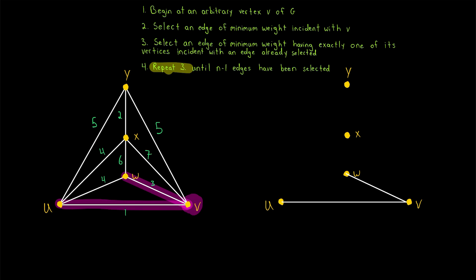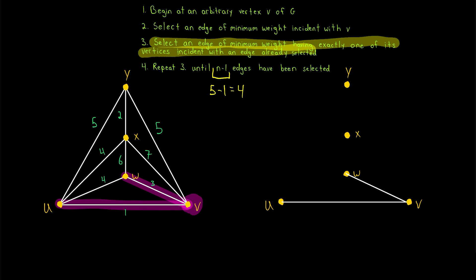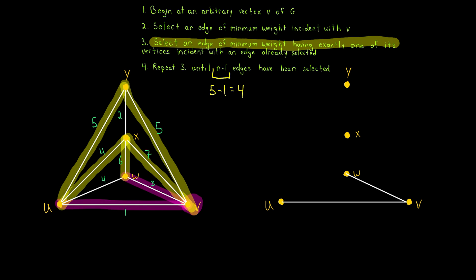Now we repeat step three until n minus 1 edges have been selected. The order of our graph n is 5, so n minus 1 is 4, meaning we'll stop after selecting four edges. Among the highlighted eligible edges, we select the one of minimum weight. Notice that one edge is not eligible because it shares vertices with two edges we've already selected — it shares U with one edge and W with another. Among the eligible edges, the minimum weight is 4, joining U and X, so we select that edge.